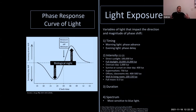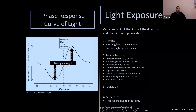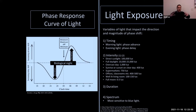For light intensity, the higher the intensity, the greater the phase shift — depending on the time of day. Full daylight or a bright sunny day has an intensity of about 10,000 to 20,000 lux, compared to living room lighting at about 150 lux — much less effective at phase advancing internal clocks if you're solely confined to indoor lighting. For duration, the longer the exposure, the bigger the phase shift.